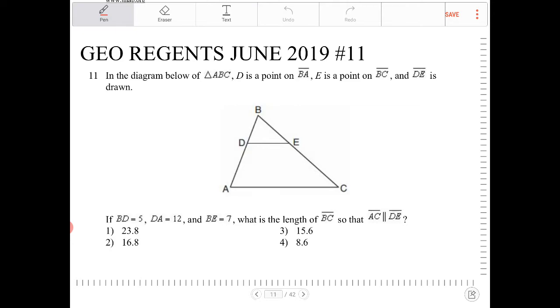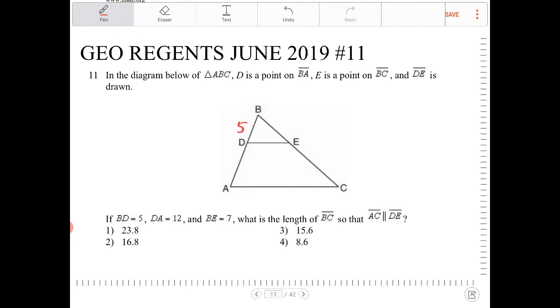So points D and E, it mentions nothing about them being midpoints, just for the record. BD is equal to 5, DA is equal to 12, BE is equal to 7. What is the length of BC so that AC and DE are parallel?